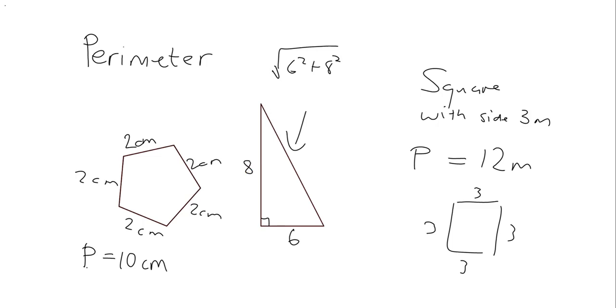Six squared is 36, eight squared is 64. 36 and 64 gives you 100, and so the length of this side is the square root of 100, which is 10.